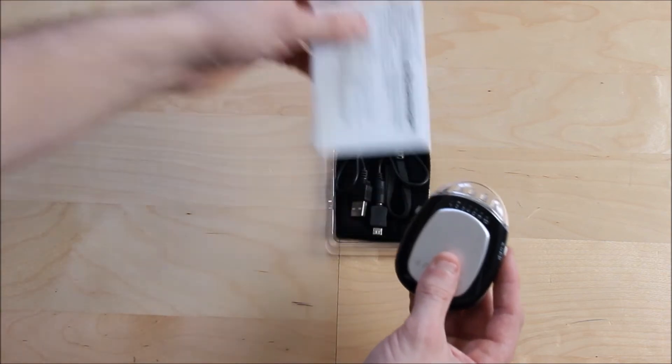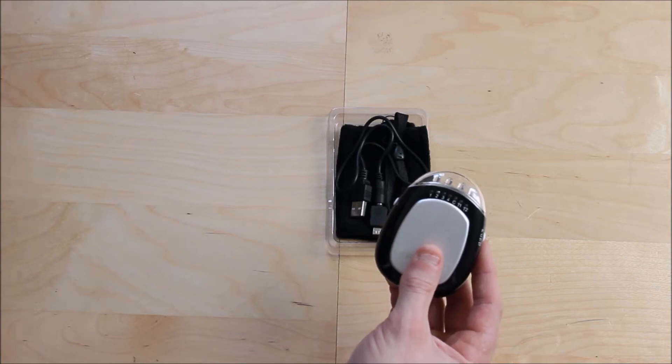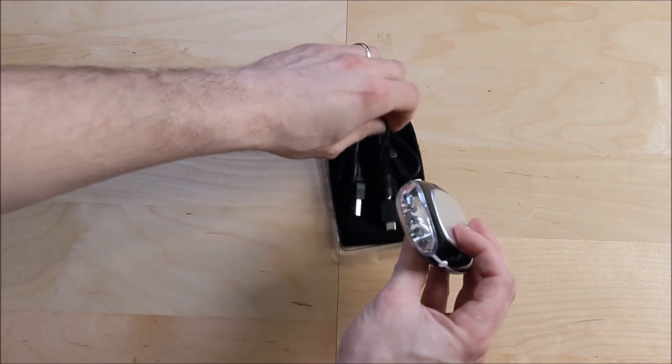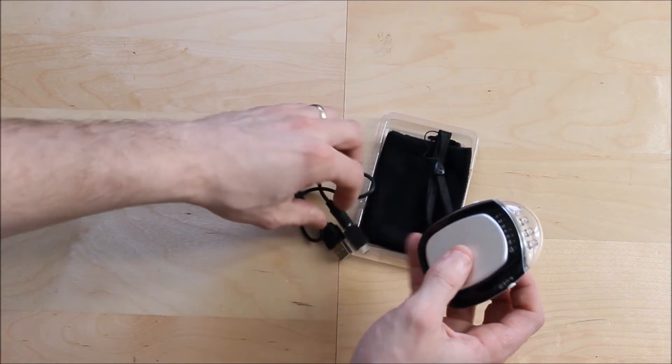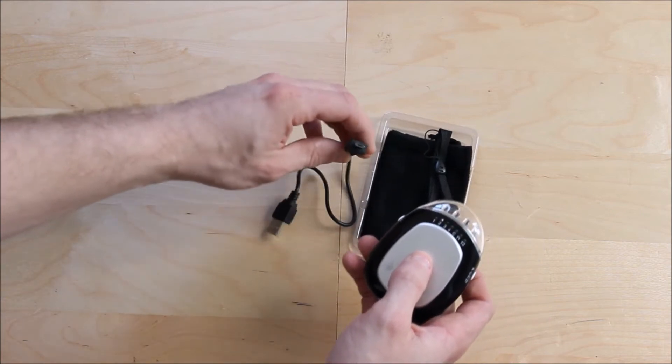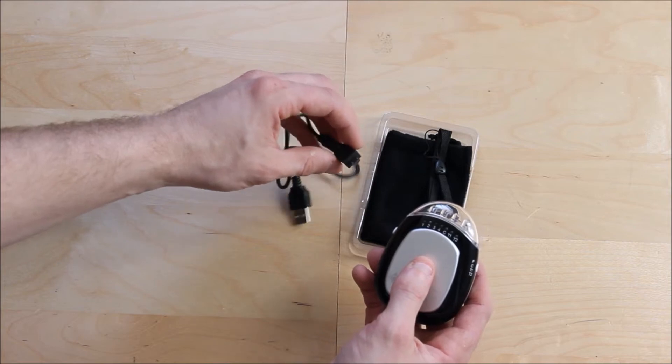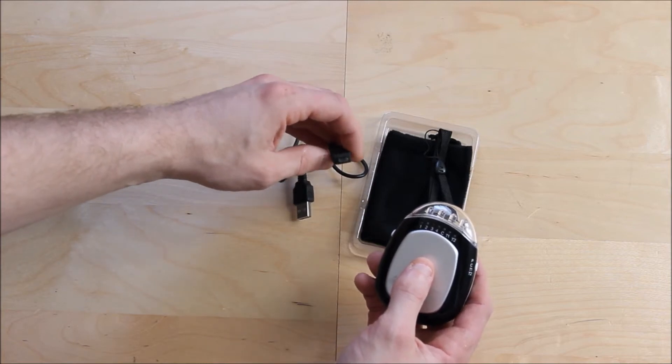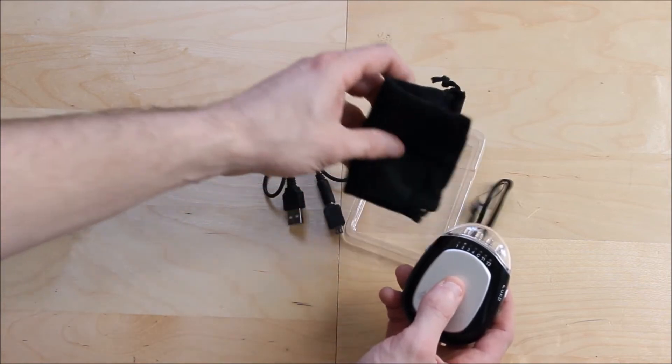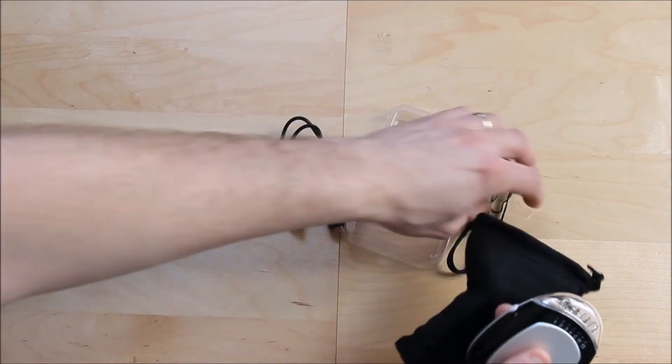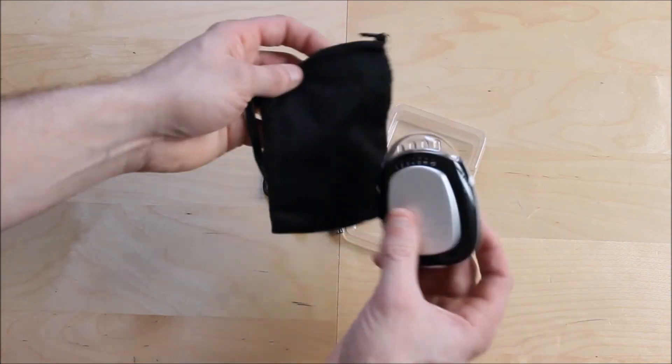It comes with its instruction packages. You have a USB cable with an adapter to connect to an iPod and to a mobile phone adaptation, and it does have a small little case where you can put your torch in.